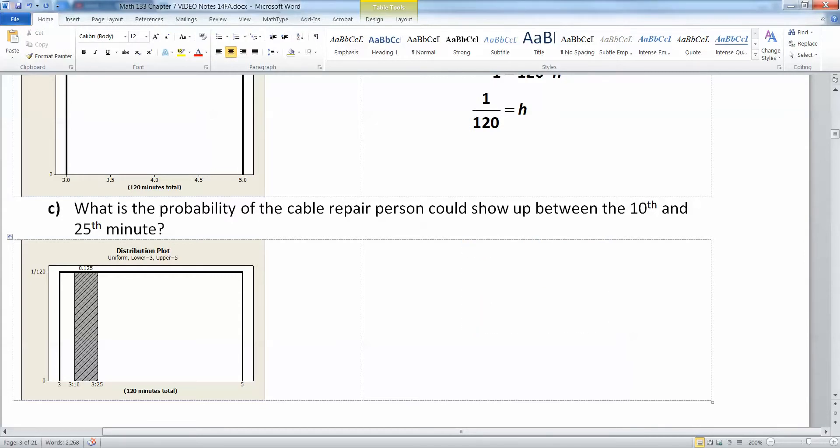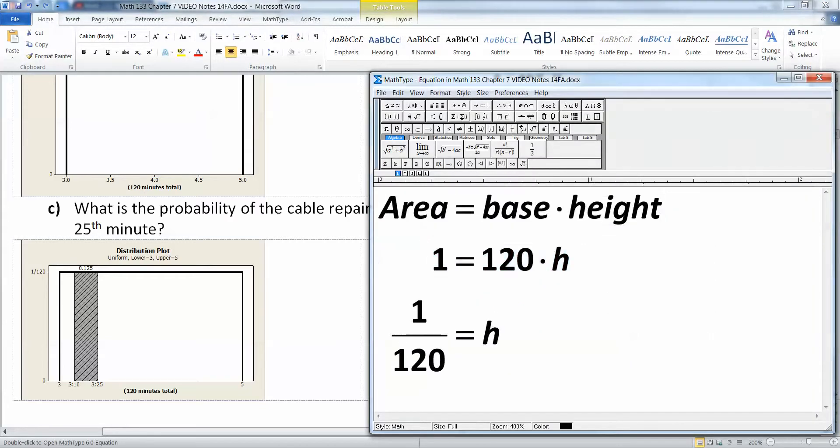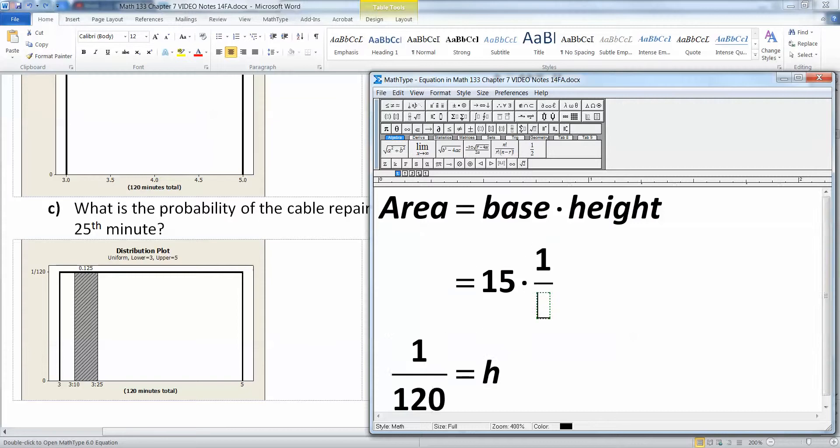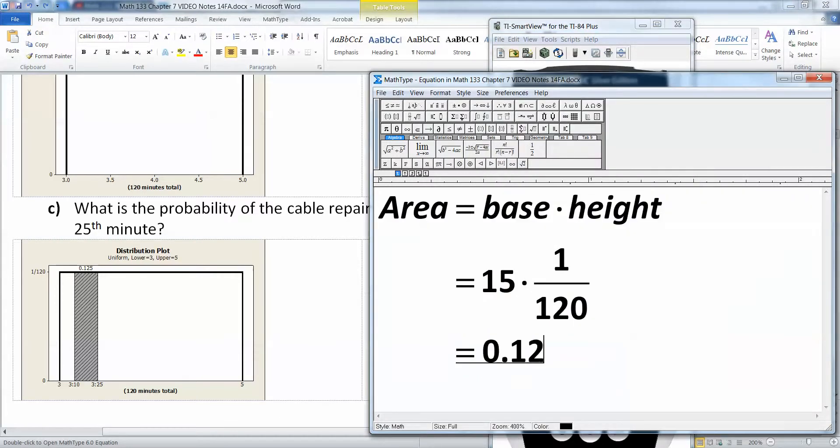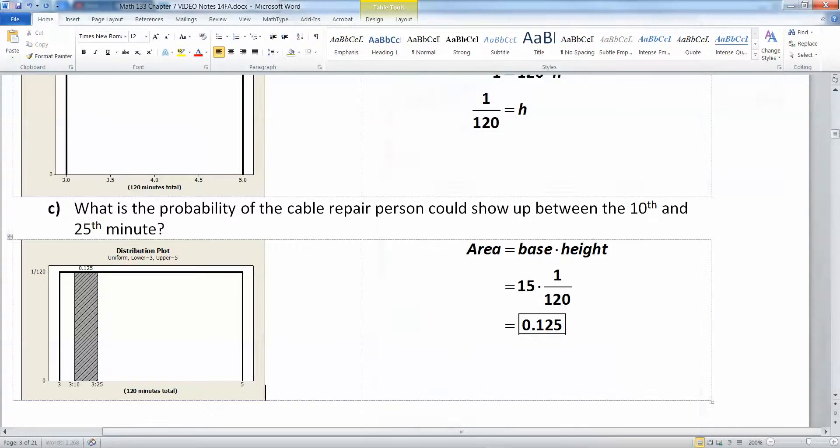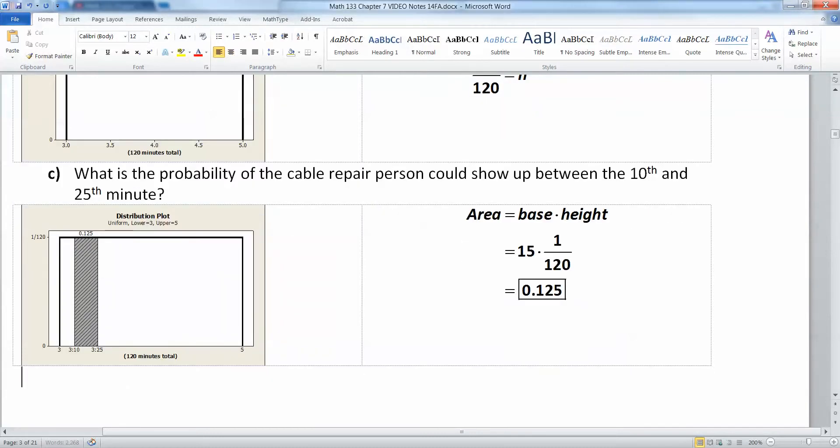It's the area of a rectangle, so this should be pretty easy. Area of a rectangle is base times height. I want the area of the small rectangle, base times height. The base is 15 minutes long, because 3:10 to 3:25 is a 15-minute period. And the height was 1 over 120. So I could multiply those two with a calculator. 15 times 1 divided by 120, and I get 0.125. That's the area, and therefore that's the probability. When you're finding the area in between those two values, you are finding the probability, which is not that different from what we were doing in Chapter 6.